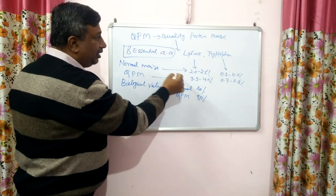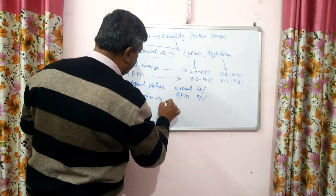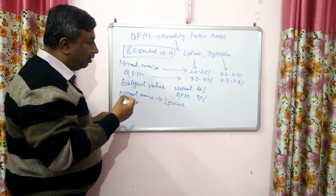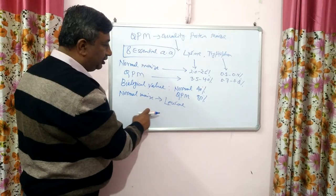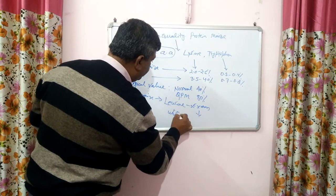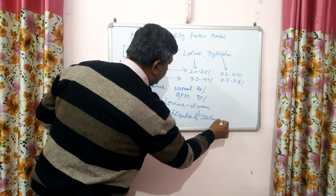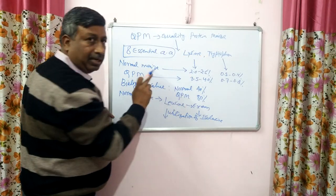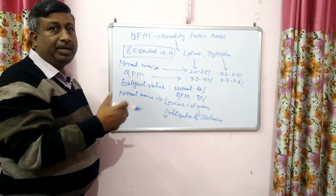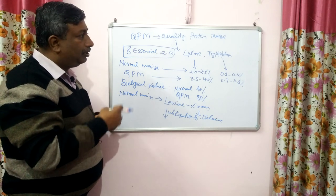Another problem in normal maize is that leucine content is high, and it suppresses the utilization of isoleucine. So in normal maize, lysine and tryptophan are less, and excess leucine decreases the utilization of isoleucine. This means there is an imbalance of four essential amino acids out of eight, resulting in poor protein quality.